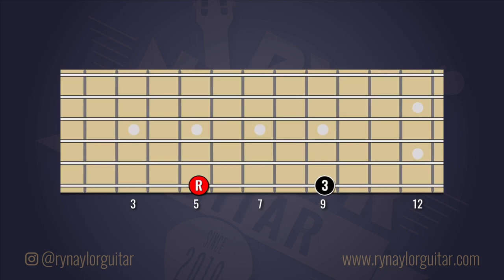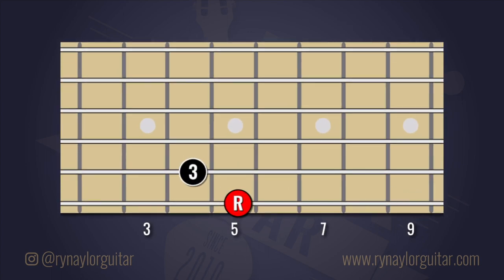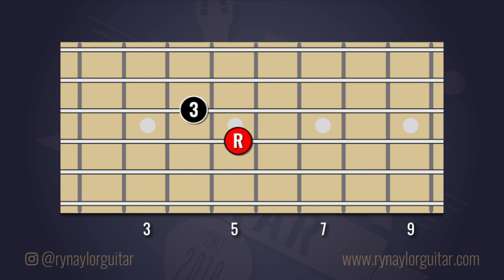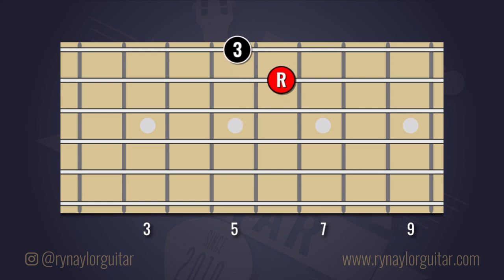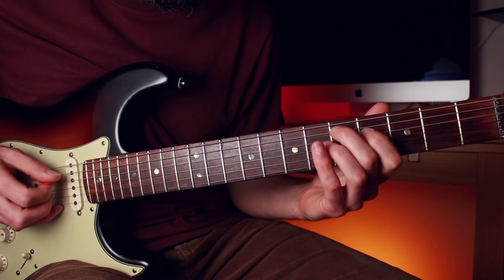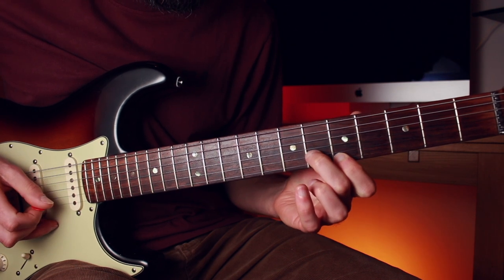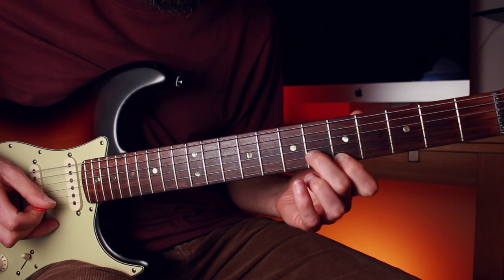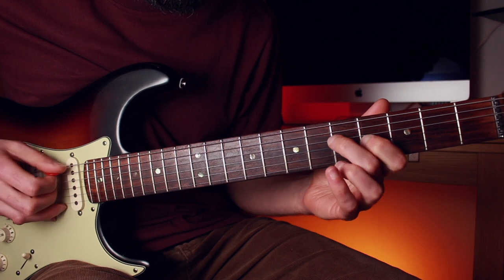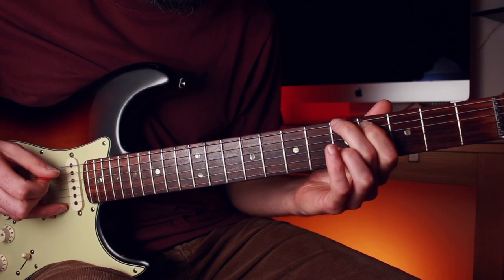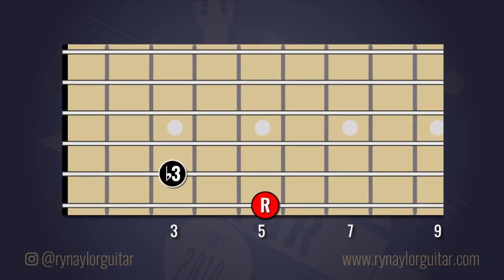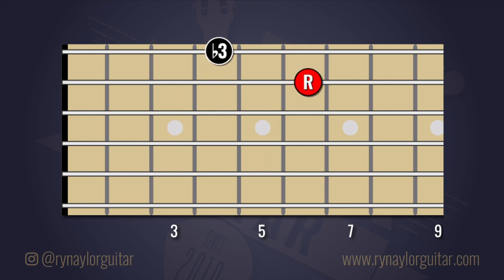The major third across a string pair is a diagonal shape, one fret lower on the string physically below. That shape is adjusted across strings three and two to find the notes in the same fret. The minor third then has a two-fret gap between adjacent strings, and the diagonal shape applies across strings three and two as well.